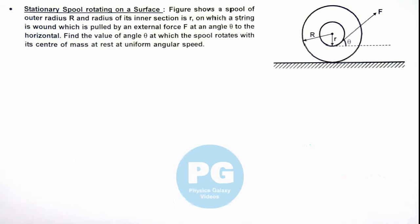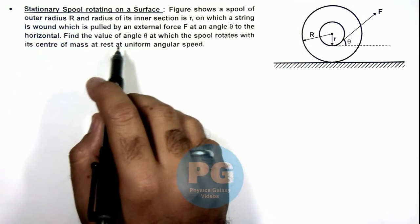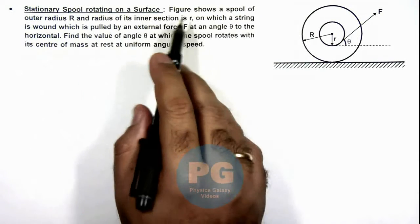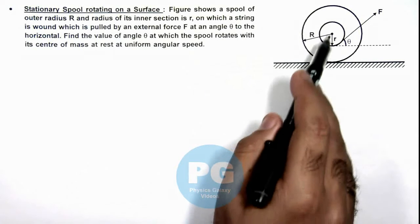In this illustration we'll discuss a stationary spool rotating on a surface. Here we are given that the figure shows a spool of outer radius R and the inner radius small r.